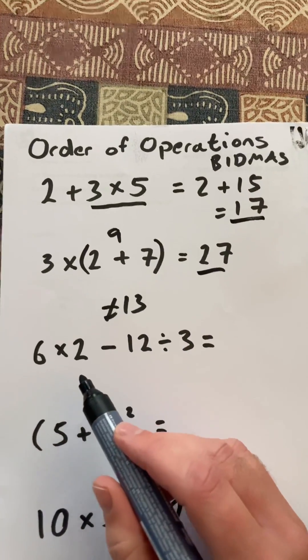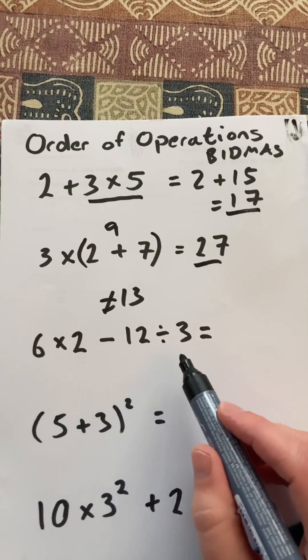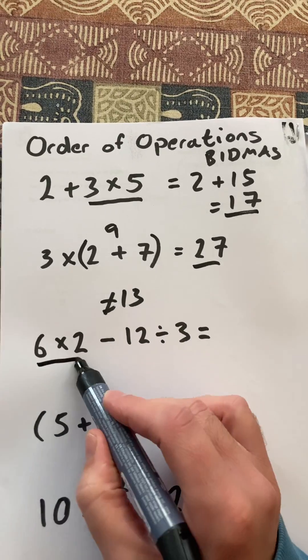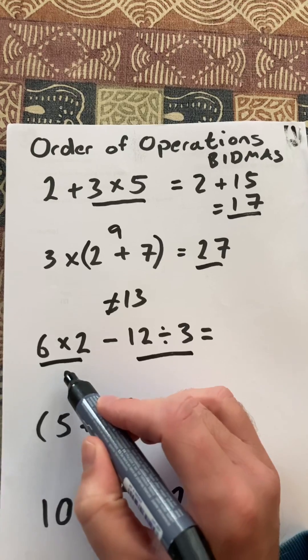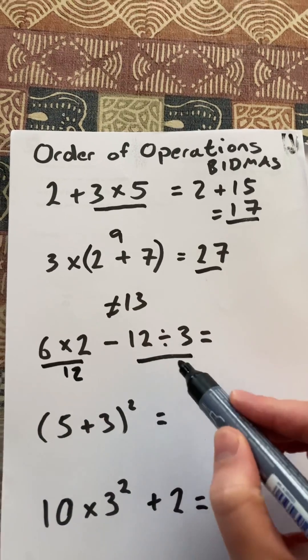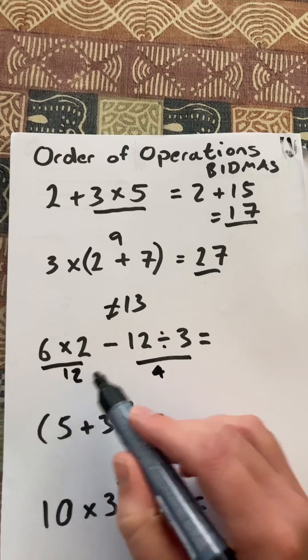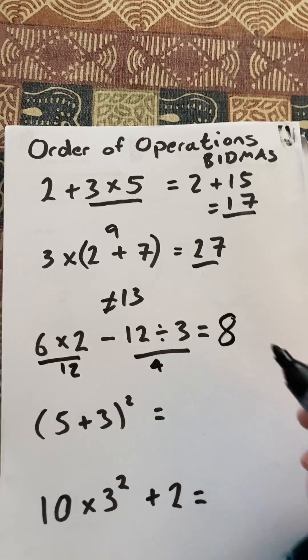Okay, the third question, 6 × 2 - 12 ÷ 3. I need to do that and then that before I do the subtraction. 6 × 2 is 12. 12 ÷ 3 is 4, so 12 - 4 is 8.